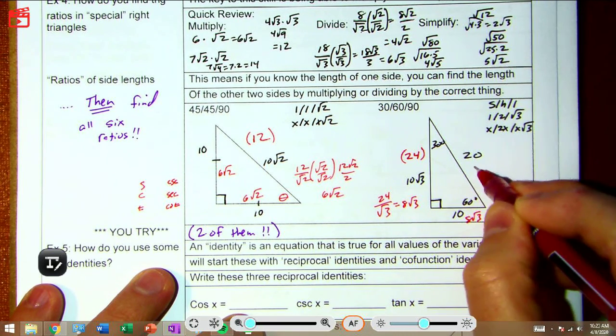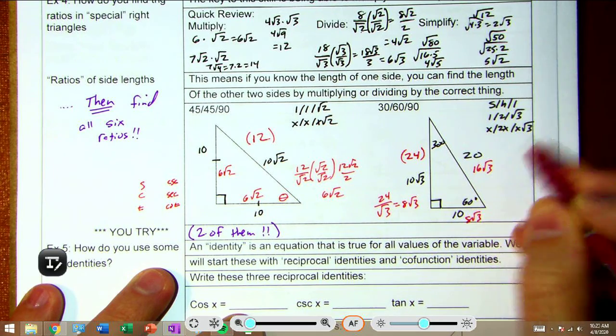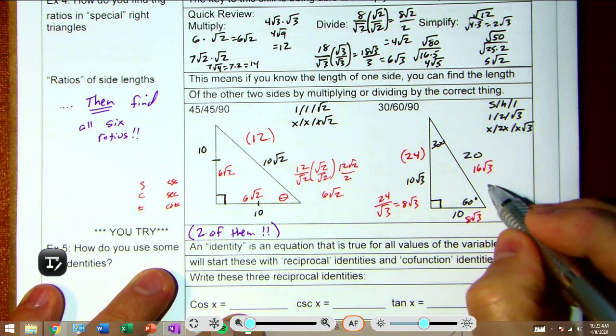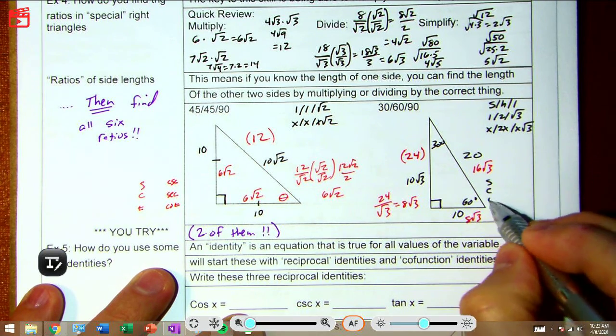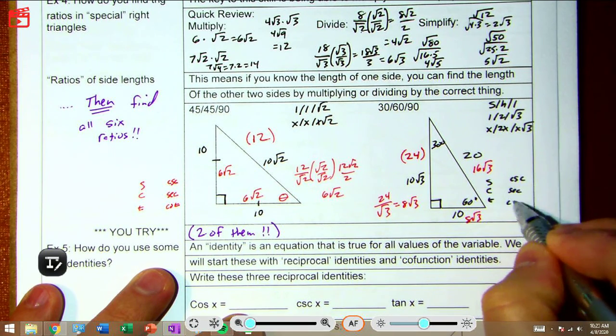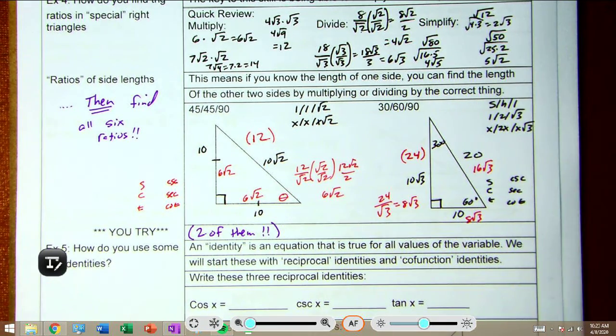And then again you're going to do the same thing with your sine, cosine, and tangent, and then cosecant, secant, and cotangent grid to find the angles.